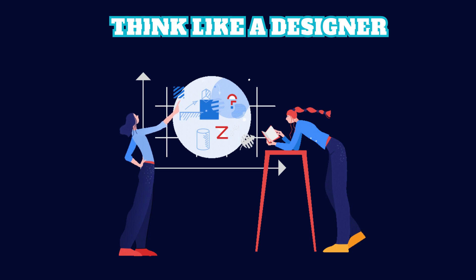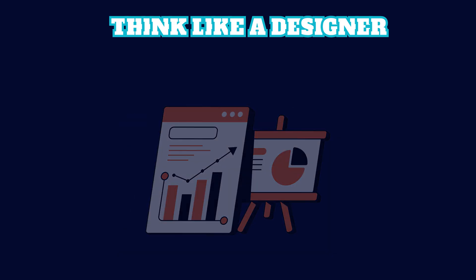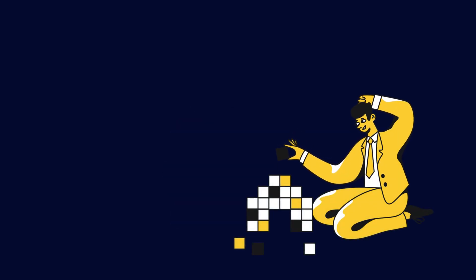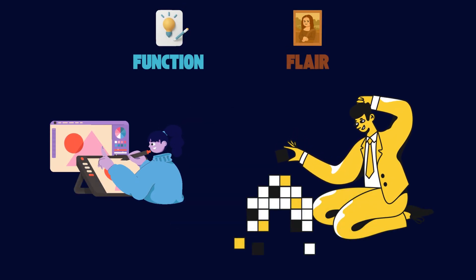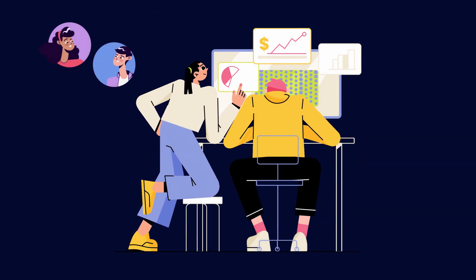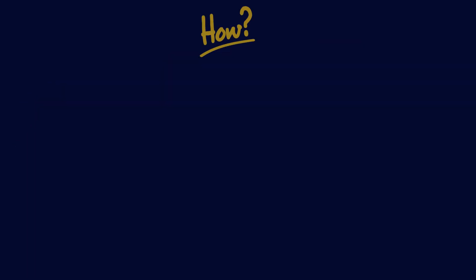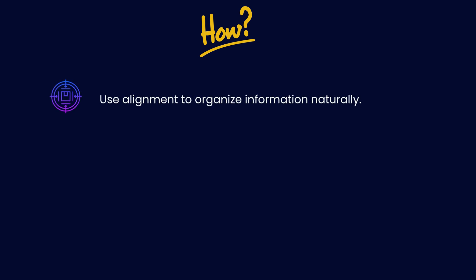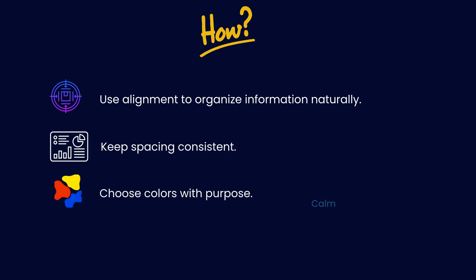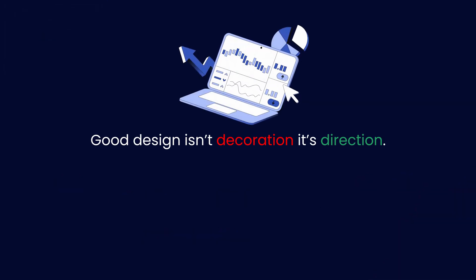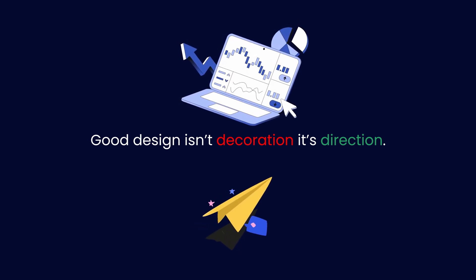Number five: think like a designer. This is where data meets art. Most of us aren't designers, but Cole shows that thinking like one is about function, not flair. Design is what makes information feel effortless — it allows people to instantly get it, without explanation. Use alignment to organize information naturally, keep spacing consistent, choose colors with purpose: blue for calm, red for warning, green for growth. Avoid overuse of bright tones, and use consistent typography. Good design isn't decoration — it's direction. And when design disappears into the background, your message becomes the hero.